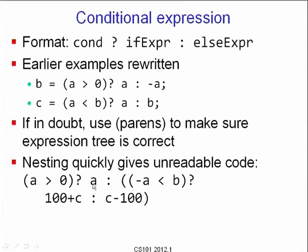Something like 'a > 0 ? a : -a < b ? 100 + c : c - 100' becomes very difficult to read very quickly. Never use — or avoid using — side effects inside these kinds of expressions, or code will be difficult to read.